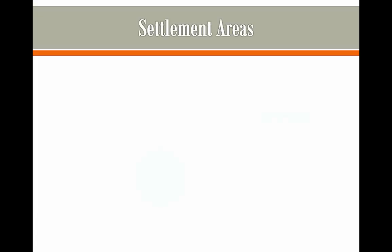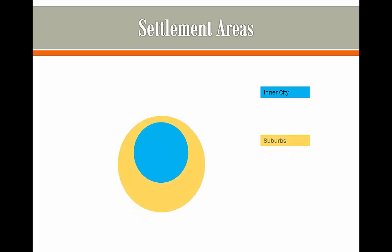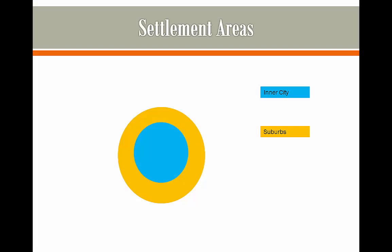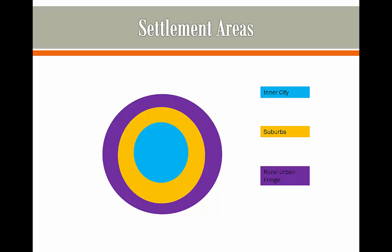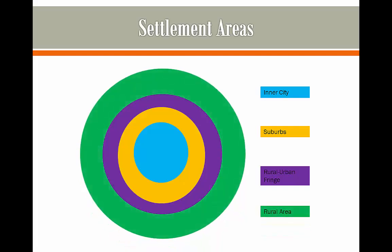So what do they look like? In the centre of the city we have the inner city, and this is the place that is closer to all the businesses and places where people work. On the outskirts of this we have the suburbs, which have different characteristics to the inner city. Further away we have the rural urban fringe, and then on the outskirts of that we have the rural area, which isn't really part of the city anymore.